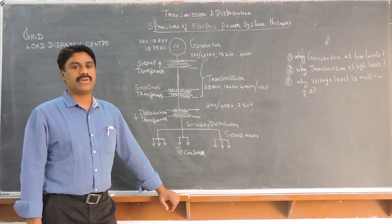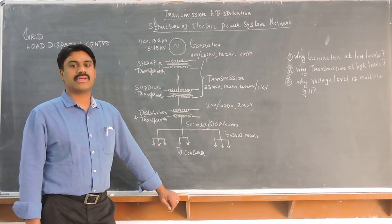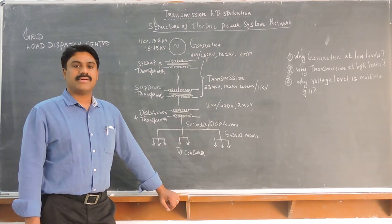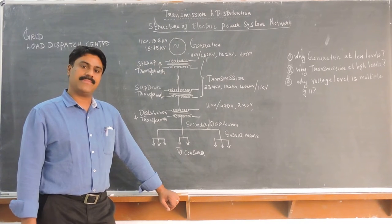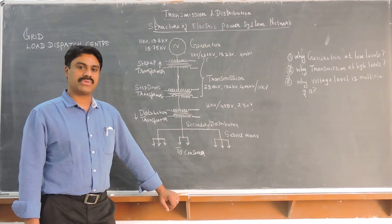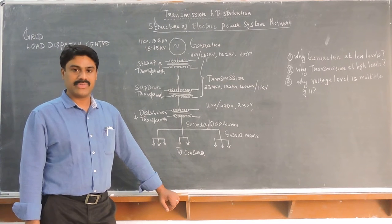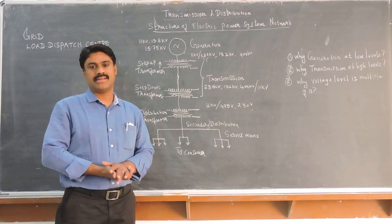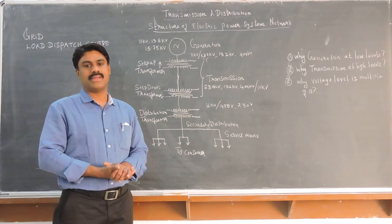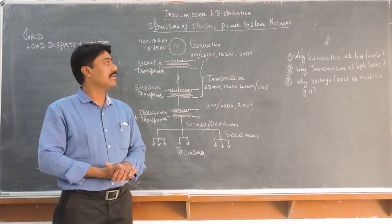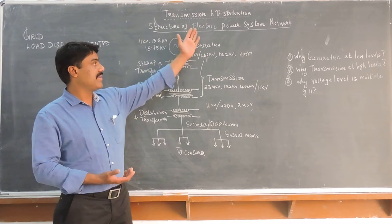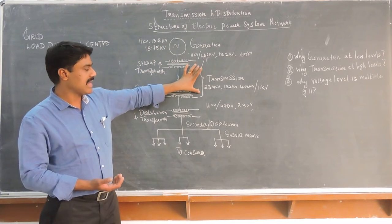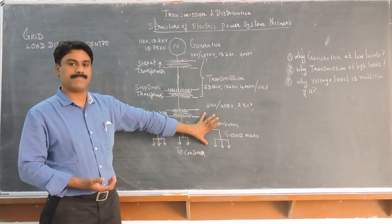The figure that you are seeing on the board gives the complete structure of the electrical power system network. We are going to see in detail about the electrical power system network. Transmission and Distribution basically comprises of three things: generation, transmission, and distribution. Here in this structure, we have basically generation, transmission, and distribution system.